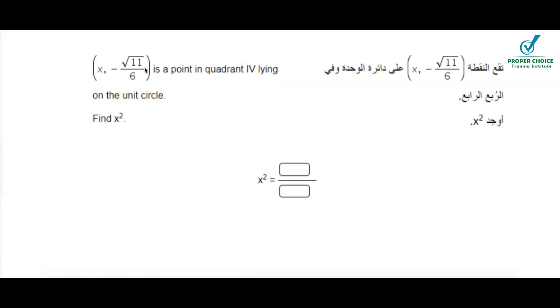x comma minus square root of 11 by 6 is a point in quadrant 4 lying on a unit circle. Find x square.